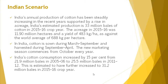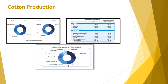The new marketing season commences from October every year. India's cotton consumption increased by 15% from 21.9 million bales in 2005-06 to 25.5 million bales in 2011-12. This is estimated to have further increased to 31.2 million bales in the 2015-16 crop year. You can also see some charts here for cotton production.